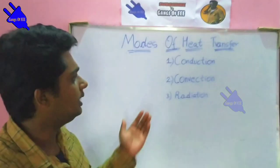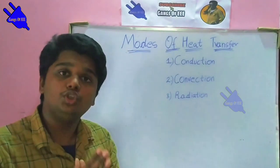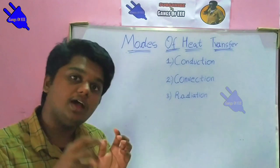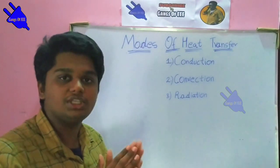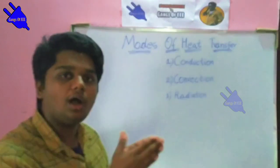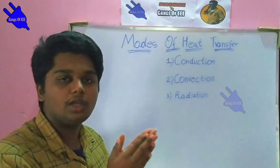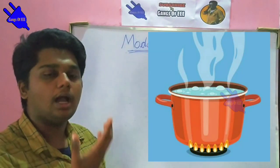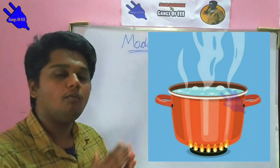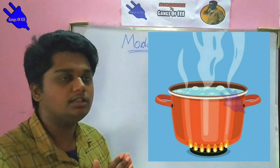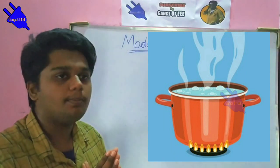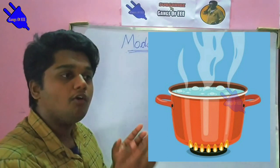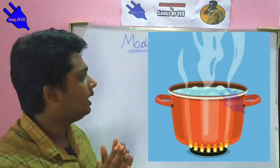The next type is convection. Convection involves heat transfer through molecules in liquids. The convection method heats molecules and can be used in liquid. For example, water is boiled in a tank — the heat transfers through the water. This is called convection.